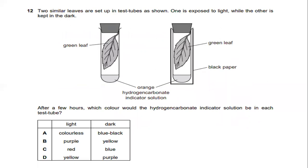Two similar leaves are set up in the test tube as shown. One is exposed to the light while the other is kept in the dark. So in this case, they are using hydrogen carbonate indicator solution. The function of hydrogen carbonate indicator solution is it can detect the increases or decreases in carbon dioxide concentration. If you can see on the left hand side, the green leaves are set up in the test tube. In bright light, the rate of photosynthesis is greater. So the leaf takes in carbon dioxide from the air in the test tube. And this reduces carbon dioxide inside the test tube.